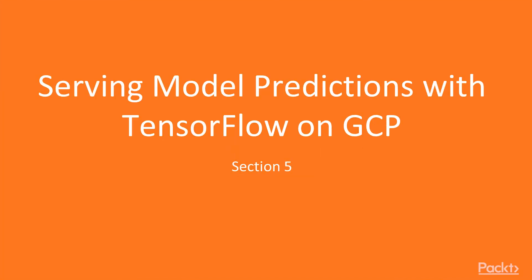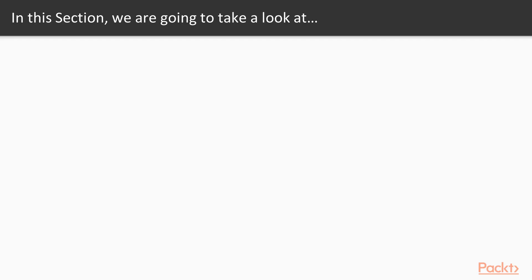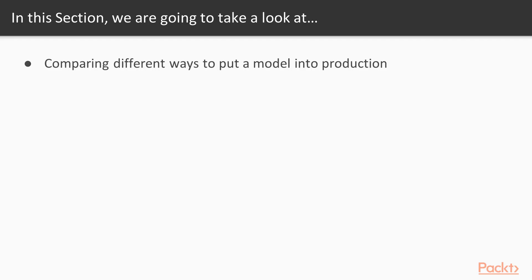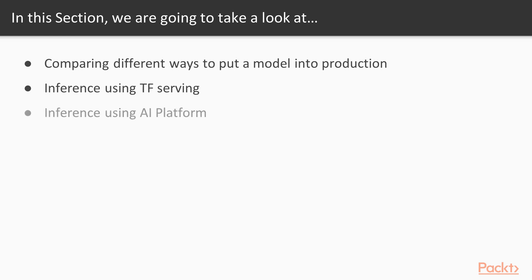Hello and welcome back to section number 5, serving model predictions with TensorFlow on GCP. Now it's finally time to put our model into production and serve it on GCP. In this section, you will learn the different ways to put a model into production on GCP, and these ways are essentially using a framework called TF Serving, using the service by Google called AI Platform, and utilizing cloud functions for serving model predictions.